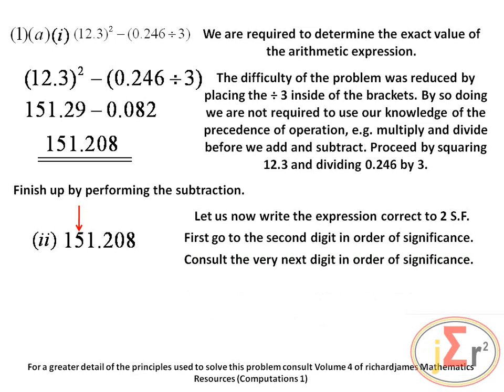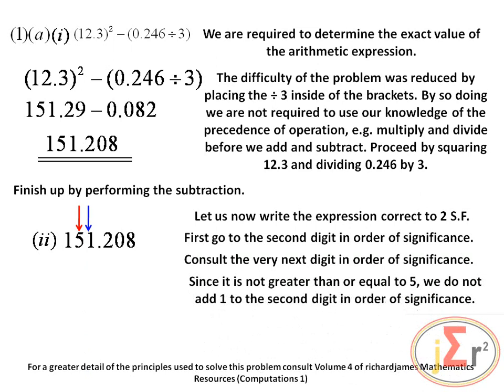We are going to consult the very next digit in order of significance — that 1. We examine to see if that digit is greater than or equal to 5. If it is greater than or equal to 5, we will add 1 to the second digit in order of significance. But it is not equal to 5 and not greater than 5, so we do not add 1. We write the 5 as it is, without adding 1, and the 1 is also included.